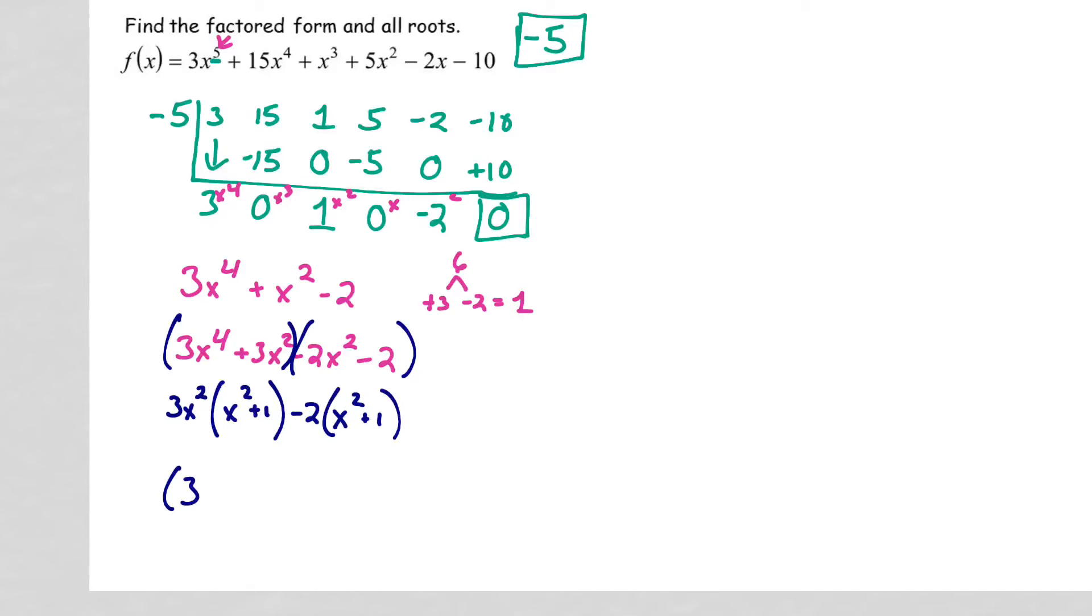So now I have three x squared minus two and x squared plus one. x squared plus one is going to be x plus i, x minus i, which means up here, i and negative i.